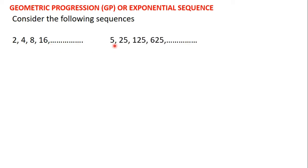The second sequence has terms 5, 25, 125, and 625. If you consider this carefully, 5 times 5 gives 25, 25 times 5 gives 125, and 125 times 5 gives 625. So in this sequence, to get the value of a term, all you need to do is multiply the preceding term by 5.